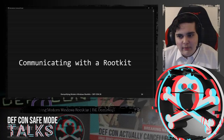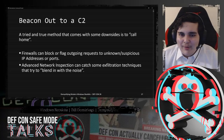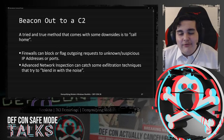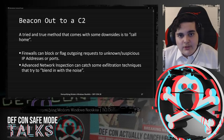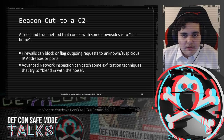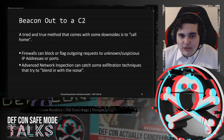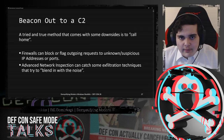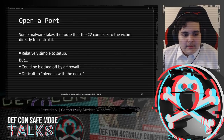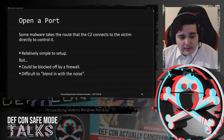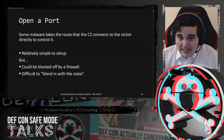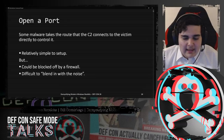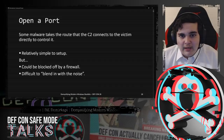Let's talk about communicating with a rootkit. A tried-and-true method is to just call home to a C2. Firewalls can block or flag requests going to suspicious IPs or ports. Even for more complex methods such as DNS exfiltration, there are solutions being developed like advanced network inspection that can catch some of these methods. Some malware takes the route where the C2 connects to the victim directly to control it - this is extremely easy to set up, but it's extremely easy for a firewall to block and very difficult to blend in with the noise.